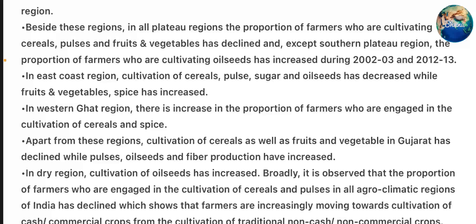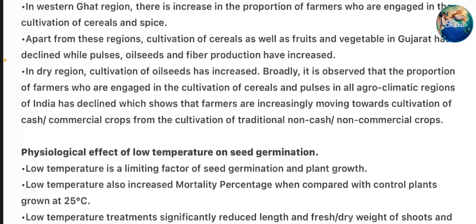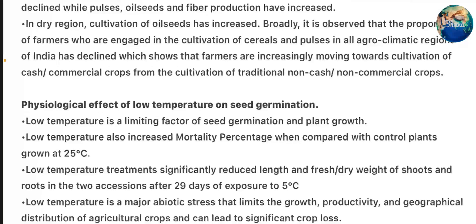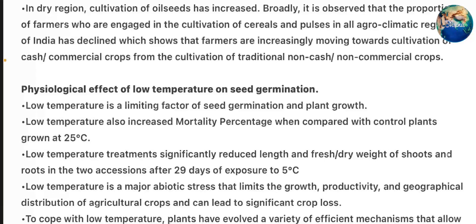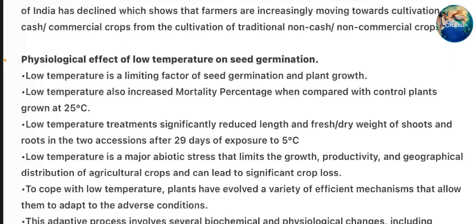In dry region, cultivation of oilseeds has increased. Broadly, it is observed that the proportion of farmers engaged in cultivation of cereals and pulses in all agro-climatic regions of India has declined, which shows that farmers are increasingly moving towards cultivation of cash and commercial crops from the cultivation of traditional non-commercial crops.